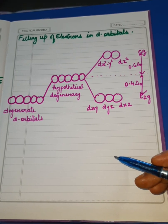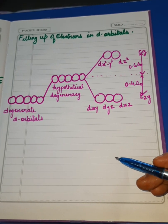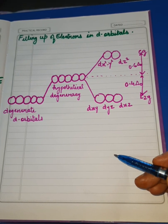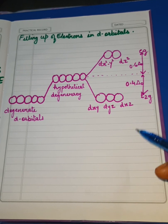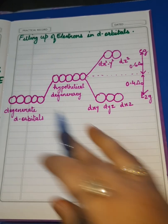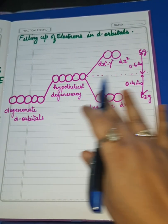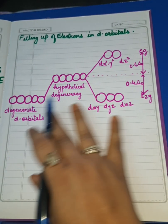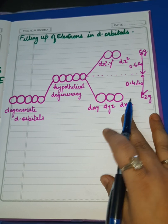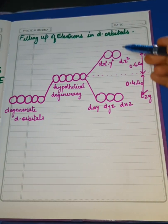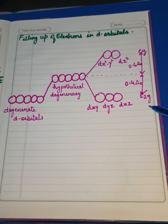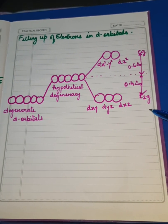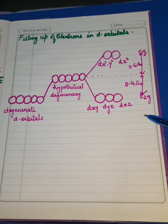Hello my dear students. In the previous video we studied about the crystal field splitting. I explained this splitting — how it takes place and the energies of the EG and T2G set of d orbitals.